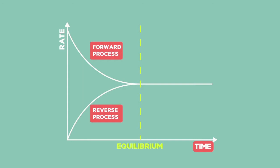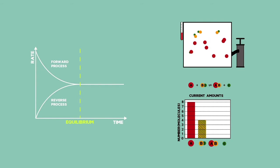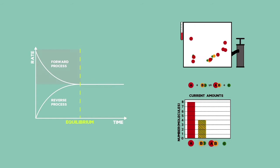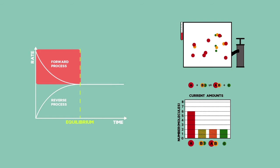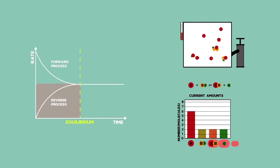When a reaction starts, we have reactants in a reaction vessel and no product — only 8 particles of A and 4 particles of BC. As the reactant bonds break and products start forming, the rate of the forward reaction decreases. Now that there are two product particles each, the rate of the reverse reaction increases, as seen by the slope of the graph between zero and the equilibrium point.